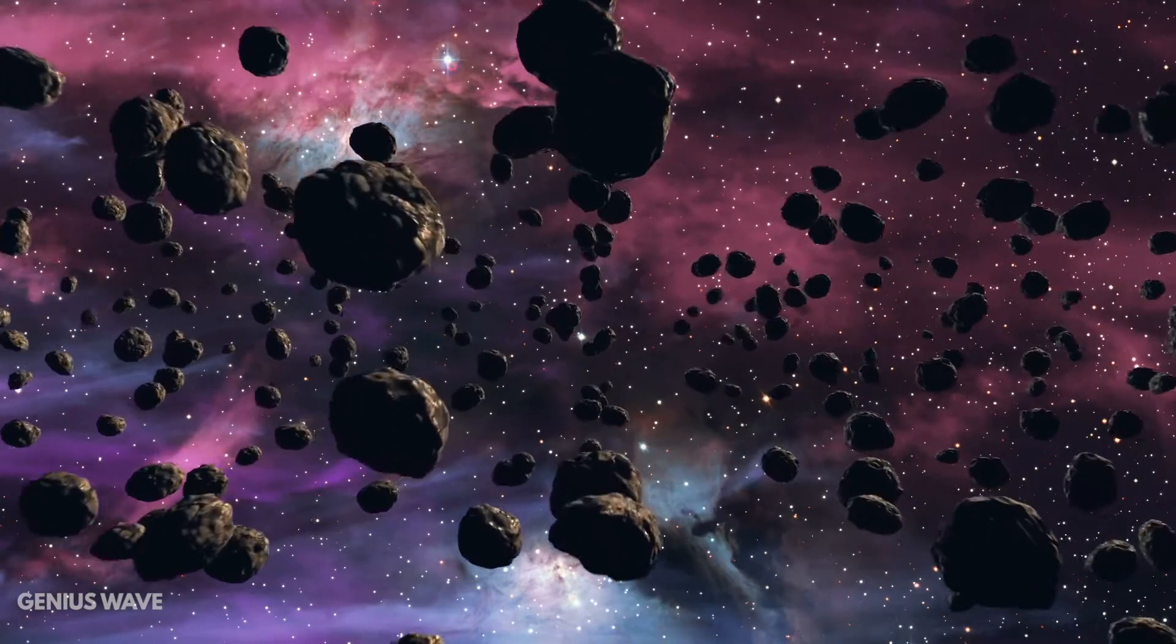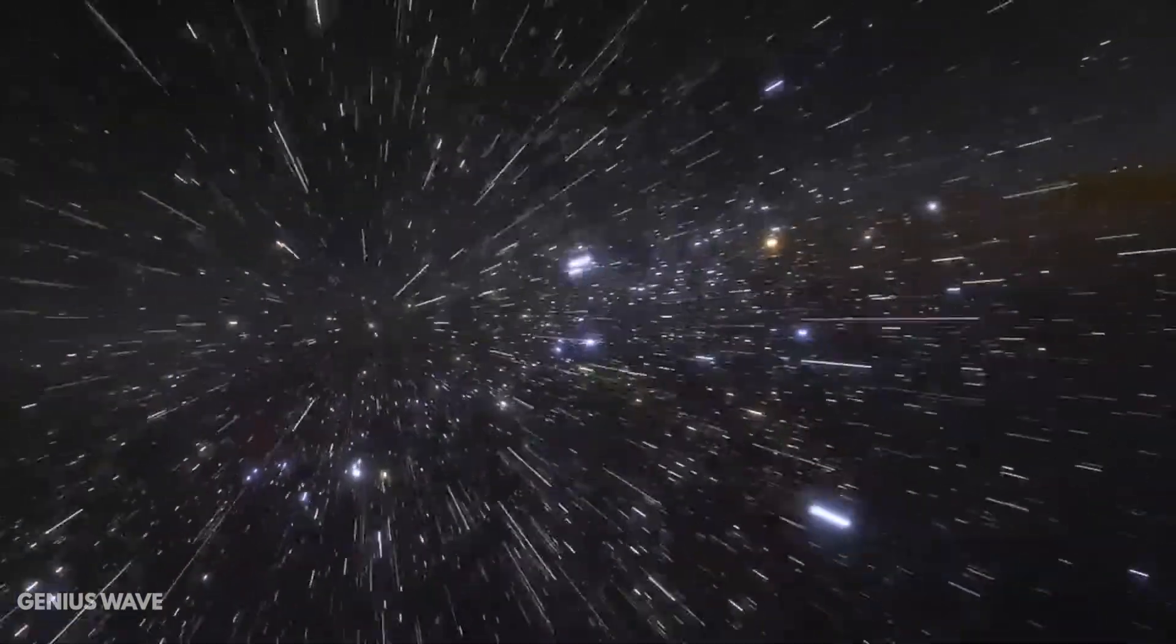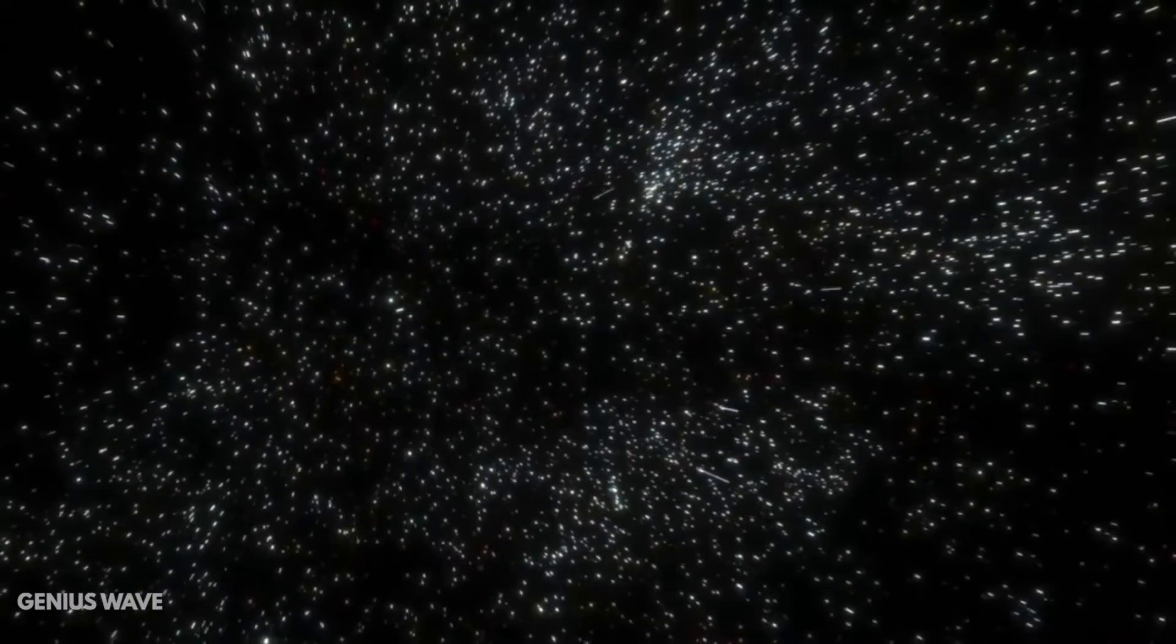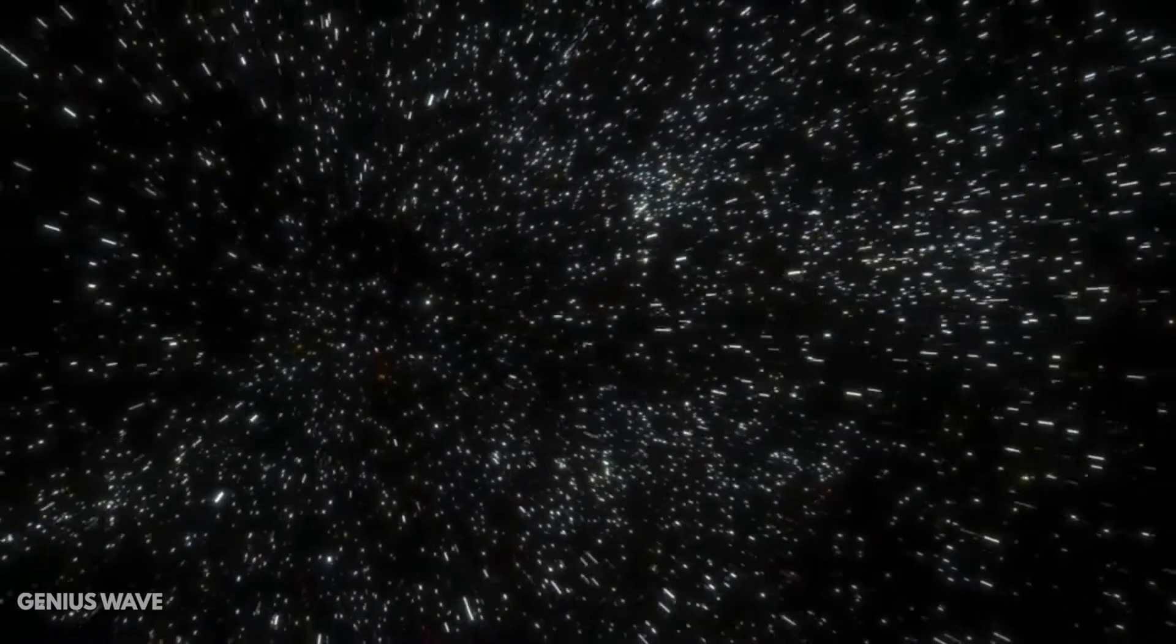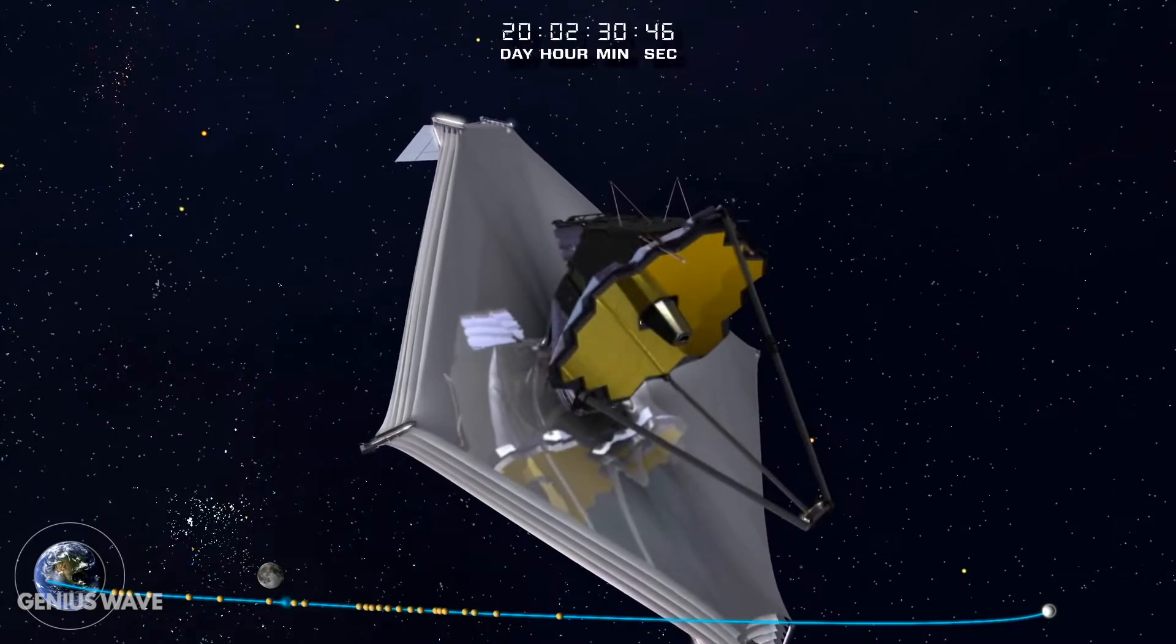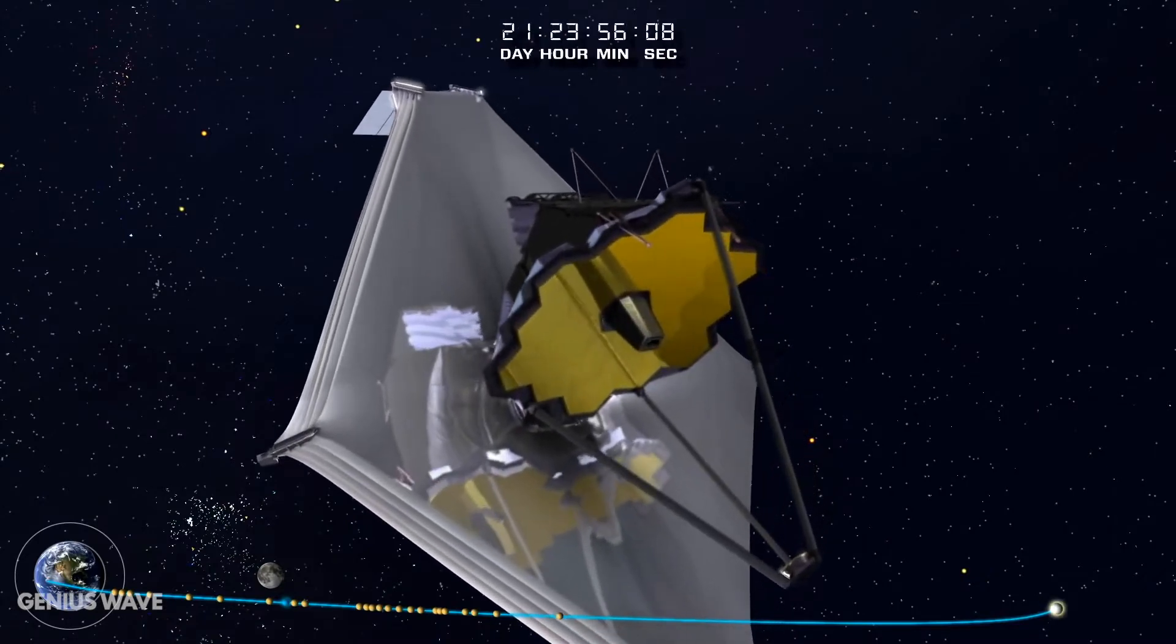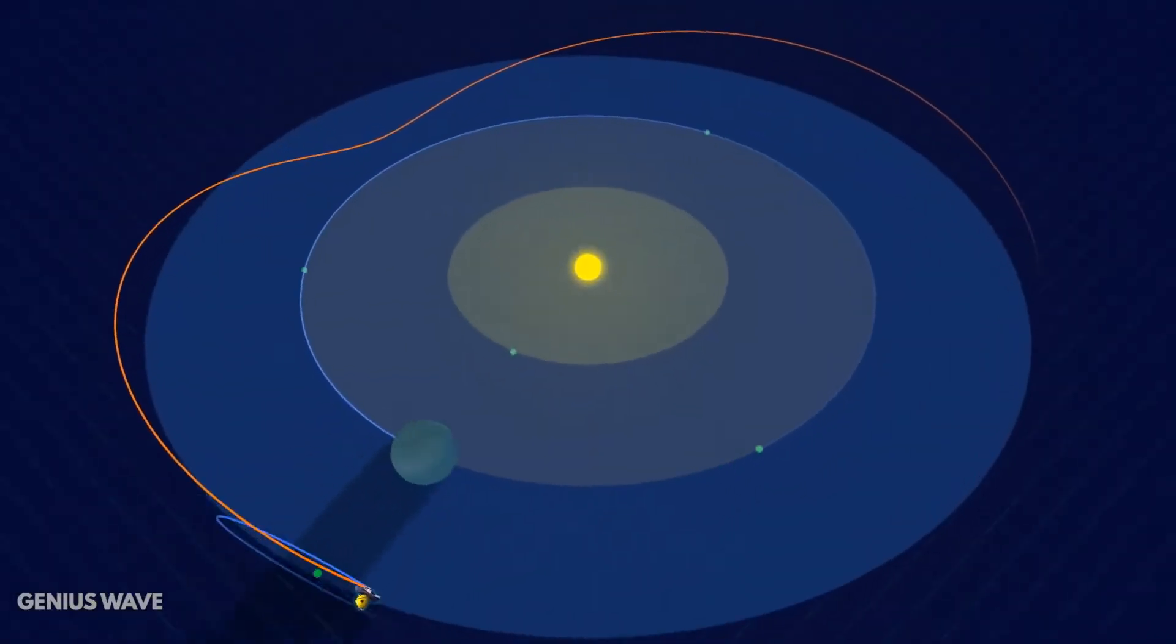These micrometeoroids, which were tiny space pebbles moving at extremely high speeds during the anticipated meteor showers close to the Webb's location in space, may occasionally strike it, but engineers built it to resist such collisions.